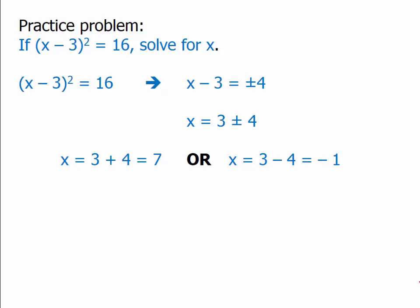Solving those gives us either x equals 7 or x equals negative 1 — those are the two solutions. Let's check: if x equals 7, then 7 minus 3 is 4, and 4 squared is 16. If x equals negative 1, then negative 1 minus 3 is negative 4, and negative 4 squared also equals 16. So those are both valid solutions.